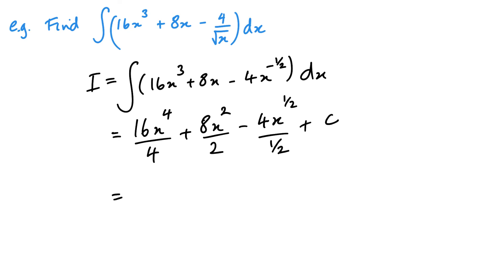Then go ahead and sort this out or simplify it. So we get 4x to the power of 4, plus 4x squared, minus 8x to the half, plus c. And if you've been following me for a while, you'll know that I do like to make sure my answer is written in the same style as the question. So the power of half, I'm going to put as a root x. And that is then in the same style as the question.